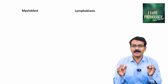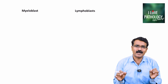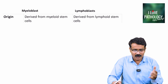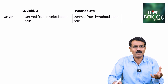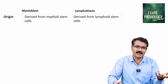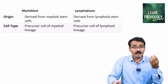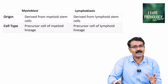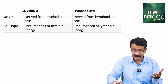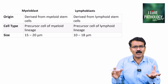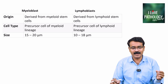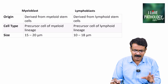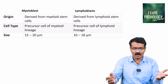Let us understand the differences between myeloblast and lymphoblast. In terms of origin, myeloblasts are derived from myeloid stem cells, while lymphoblasts are derived from lymphoid stem cells. Myeloblasts are precursors of the myeloid lineage, whereas lymphoblasts are precursors of the lymphoid lineage. In terms of size, myeloblasts are slightly larger — around 15 to 20 micrometers — whereas lymphoblasts are around 10 to 18 micrometers in size.